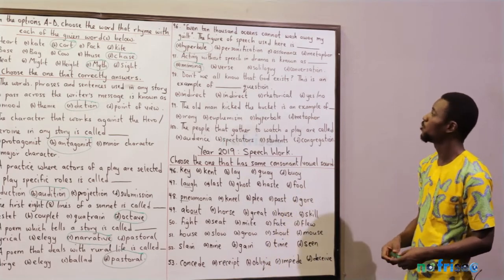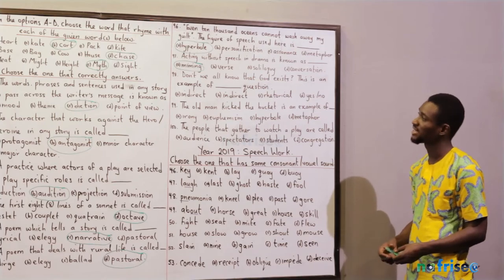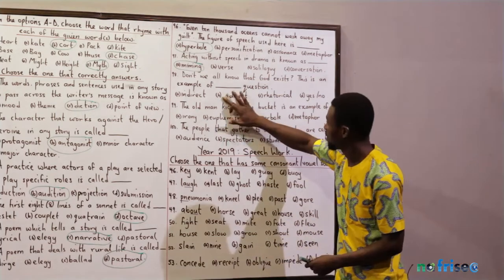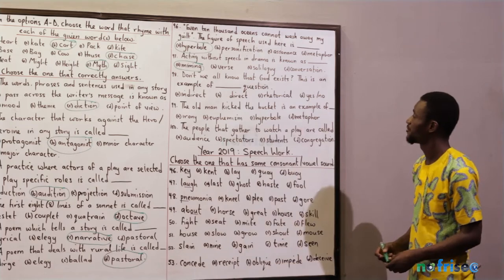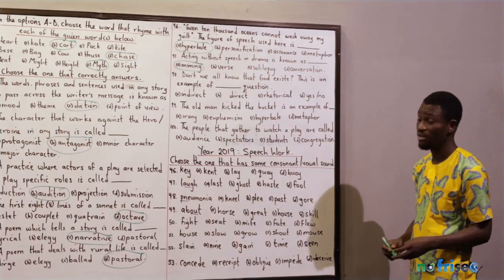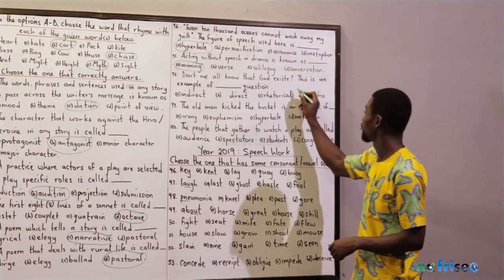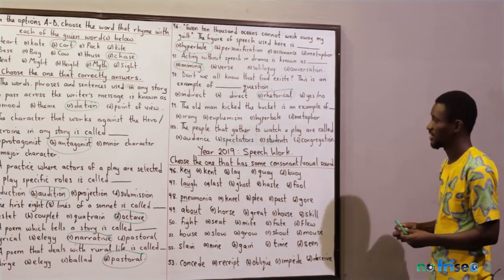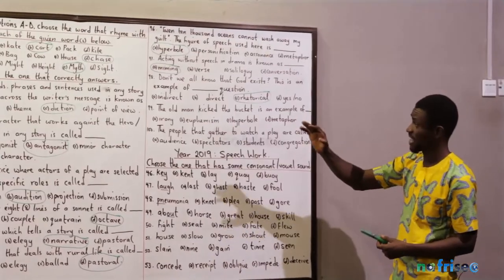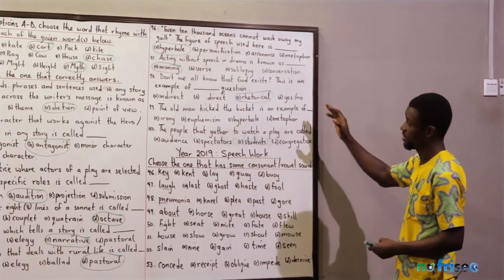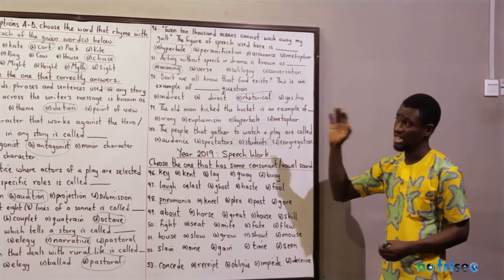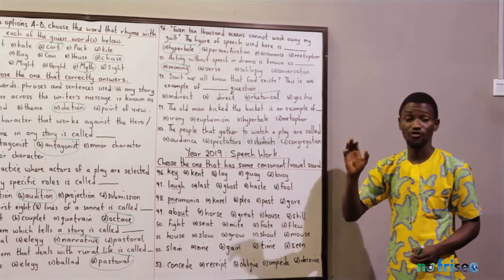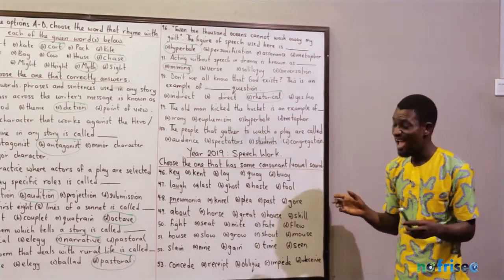Question 98: 'Don't we all know that God exists?' This is an example of what kind of question? Is it indirect, direct, rhetorical, or yes/no question? In literature, this is a rhetorical question — a question that demands no answer. There's nothing like indirect or direct question in literature in this sense; it is specifically a rhetorical question.